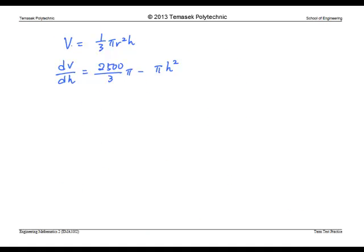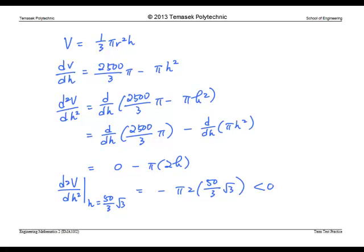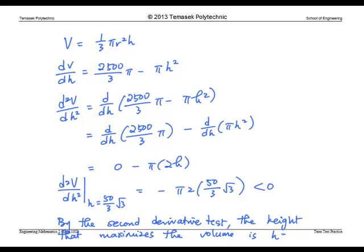These are the functions for v and the first derivative of v. The second derivative of v is equal to, substituting the value of h to the second derivative. We find that the second derivative is negative. Therefore, by the second derivative test, the height that maximizes the volume is h equals to 50 over 3 square root 3 cm.